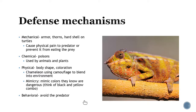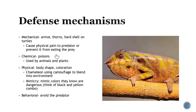Different animals, plants, and other organisms have different defense mechanisms to help them survive. There can be mechanical ones — think of armor that some insects have, thorns on plants, the hard shell on turtles. The goal is to cause physical pain to the predator and prevent being eaten. Some utilize poisons or chemical defenses. Many plants do this, and some animals will taste horrible or might actually kill the predator for trying to eat them.